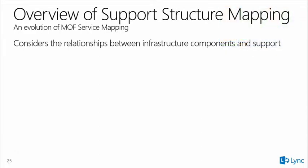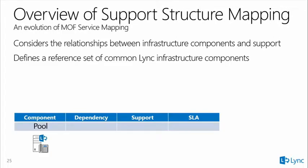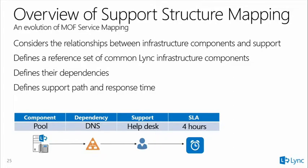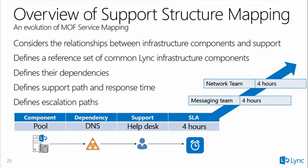The support structure mapping is an evolution of the Microsoft Operations Framework Service Mapping. It considers relationships between infrastructure components and support, defines a reference set of common LINQ infrastructure components, defines their dependencies, defines support paths and response times, and defines escalation paths. For instance, if the pool depends on DNS, which depends on the help desk with a 4-hour SLA, and the messaging team has a 4-hour escalation, but the network team has no SLA — we've just identified a gap in the support structure.